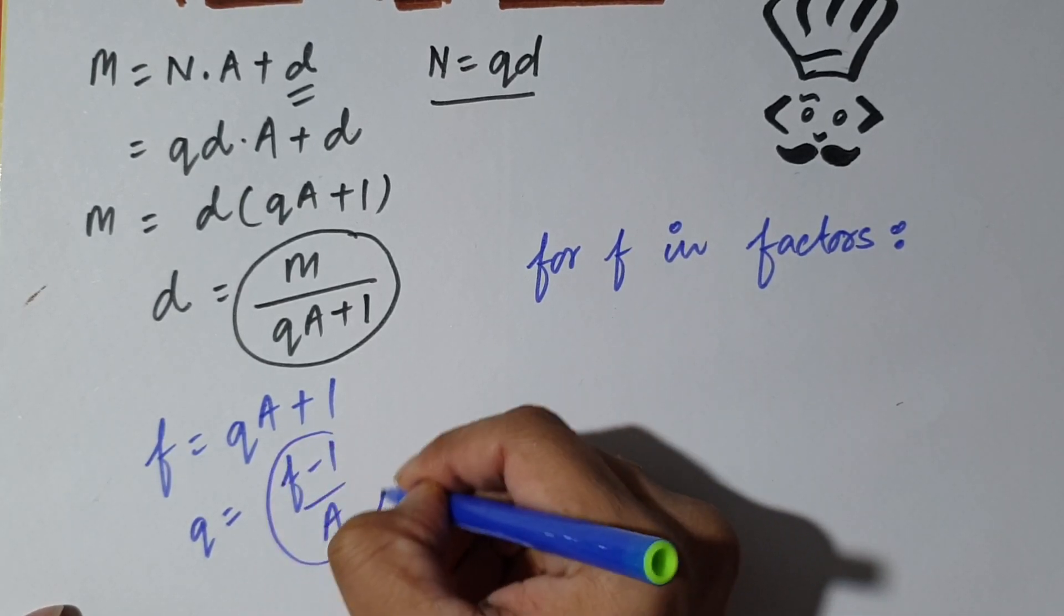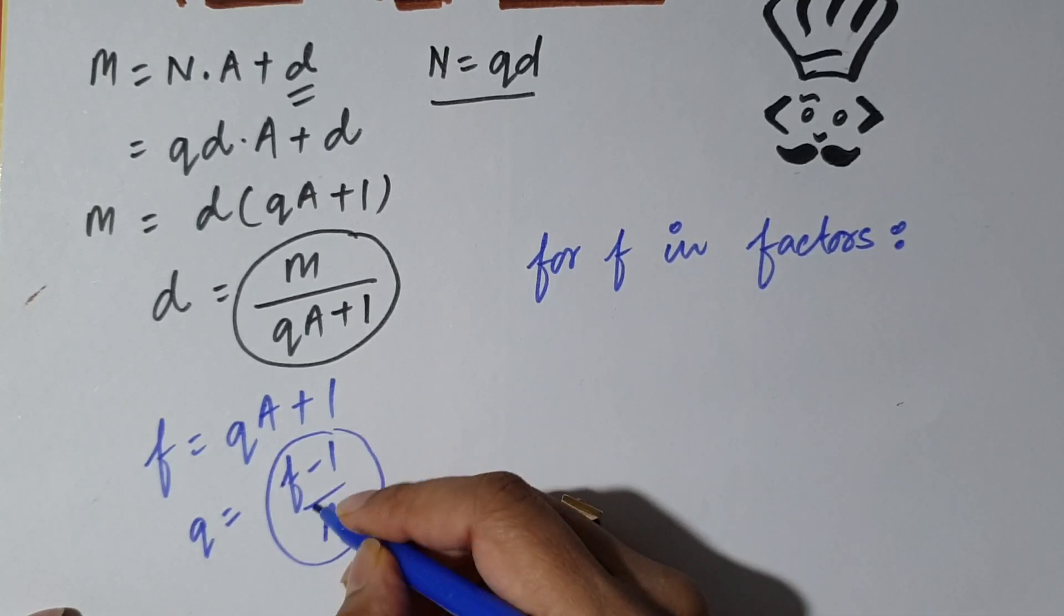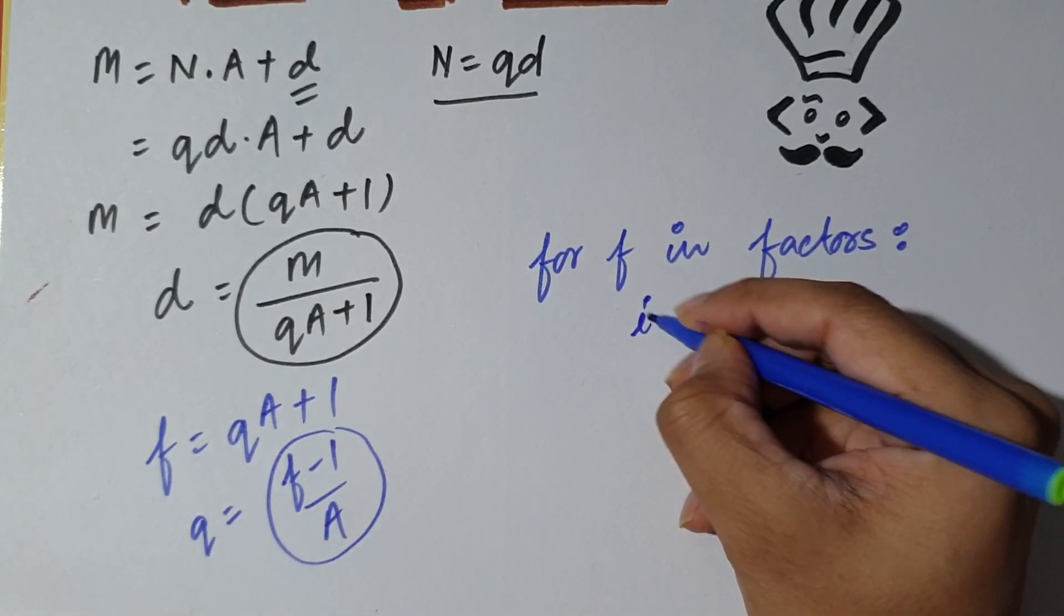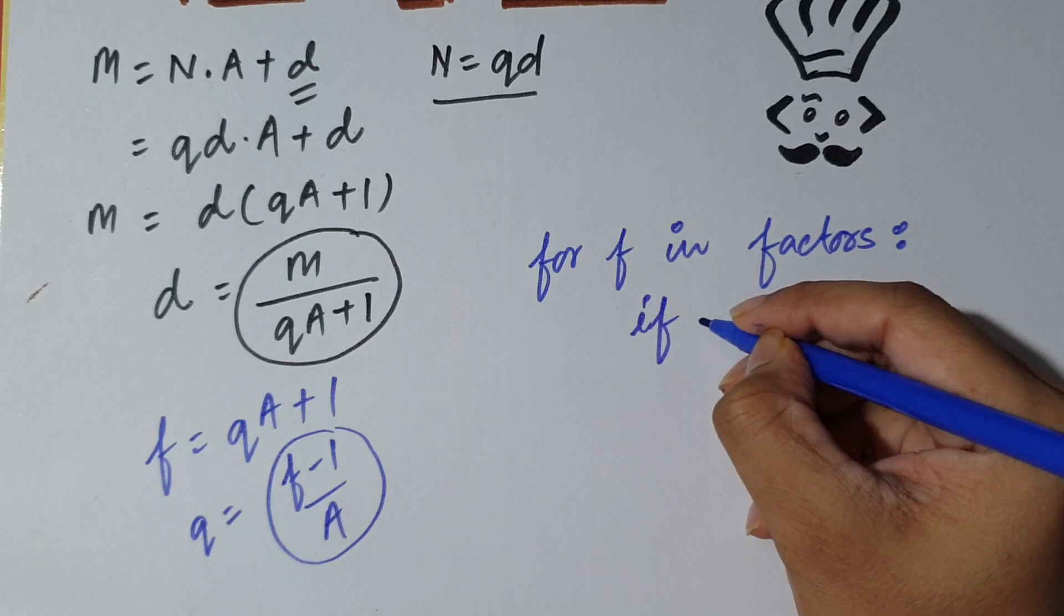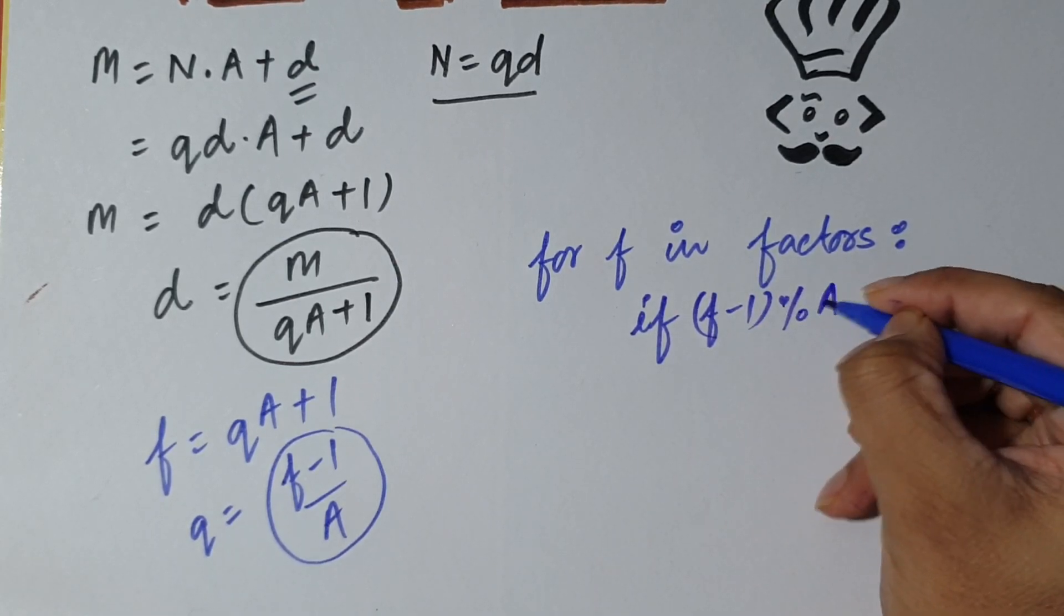So this should also be an integer. If Q is an integer, so this should also be an integer. And for this to be an integer, A should completely divide F minus 1. So if F minus 1 mod A equals 0, that is if we divide F minus 1 by A and the remainder is 0.